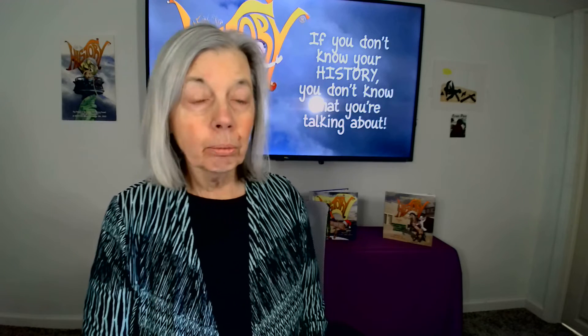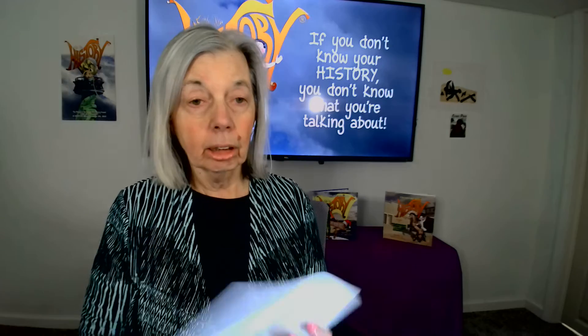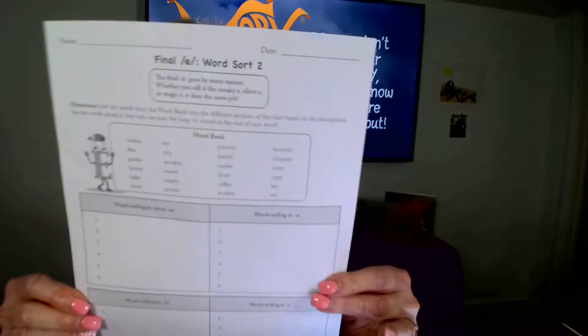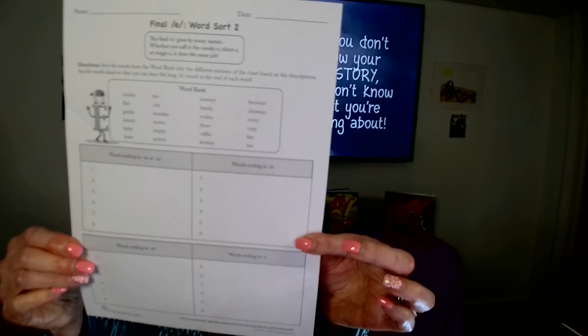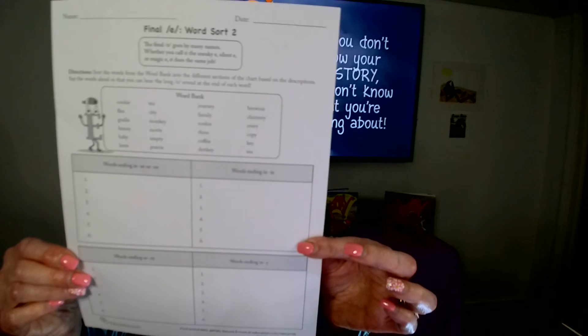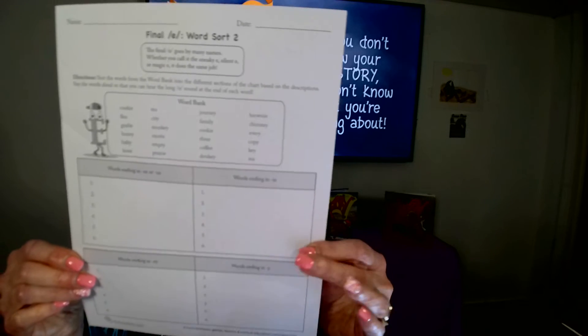What we will be doing is looking at the different spellings of the silent E sound. To do this you will simply need a worksheet, which is provided — look at the show notes linked to my Pinterest board.